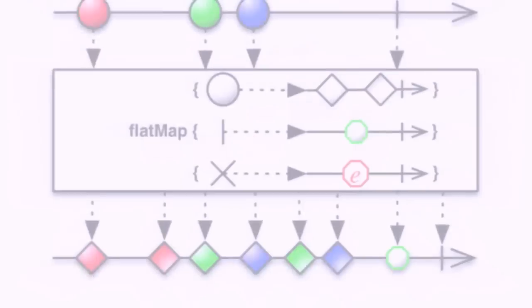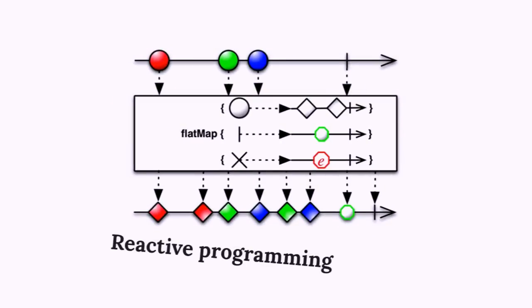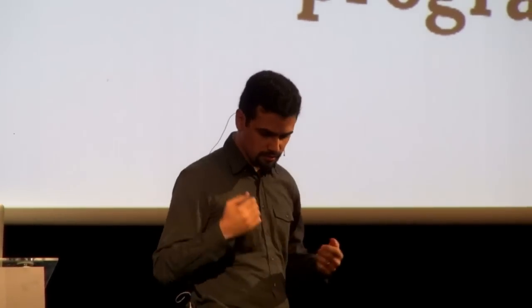What about this diagram? Do you recognize this? It's supposed to make event-driven programming somehow composable or observable. And finally now you have propagation of change. I mean, what does that mean?